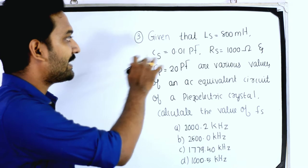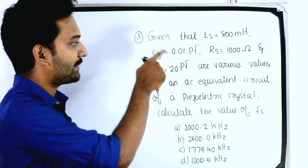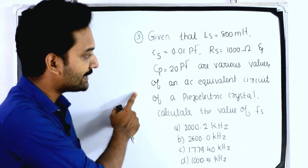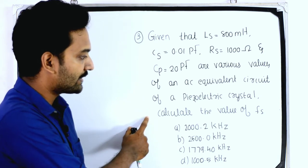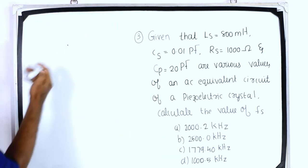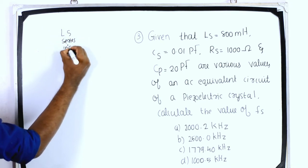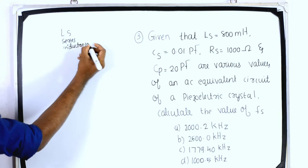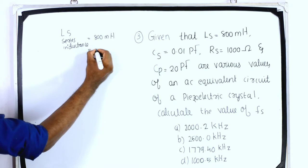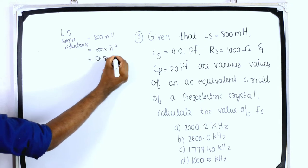Third question: given that LS = 800 millihenry, CS = 0.01 pF, RS = 100 ohm, and CP = 20 pF — these are the values of an AC equivalent circuit of a piezoelectric crystal. Calculate the value of fs. We convert LS: series inductance LS = 800 millihenry = 800 × 10⁻³ = 0.8 H.